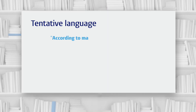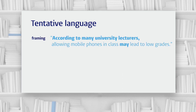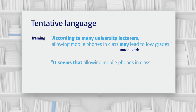Combining these different approaches gives you even more flexibility to express exactly the amount of certainty that you want. In this example we've combined framing — 'according to many university lecturers' — with the modal verb 'may': 'According to many university lecturers, allowing mobile phones in class may lead to low grades.' In this example we've combined distancing — 'it seems that' — with the qualifying phrase 'is likely to': 'It seems that allowing mobile phones in class is likely to lead to low grades.'